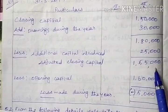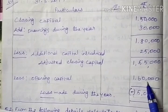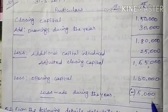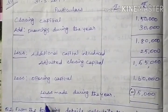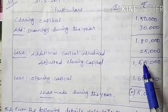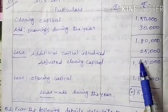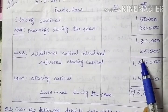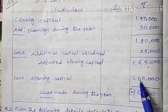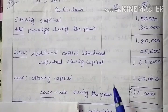Adjusted closing capital is 1,55,000 and opening capital is 1,60,000. Since opening capital is more than the adjusted closing capital, the answer is minus 5,000 — meaning a loss of 5,000. This is method number 2.